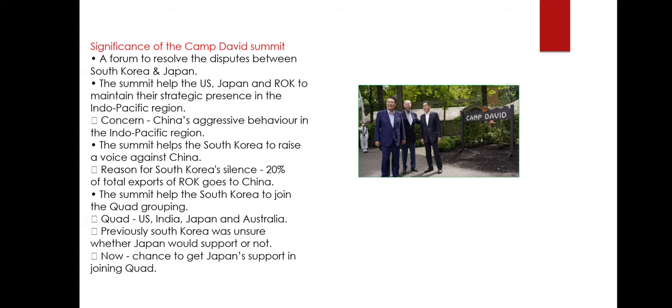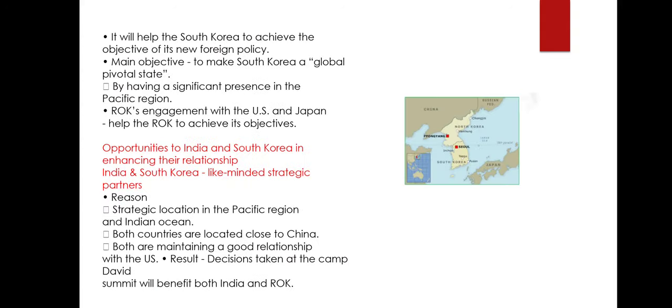Fourth, the summit may help South Korea join the Quad grouping, which consists of the U.S., India, Japan, and Australia. South Korea was unsure whether Japan would support this move given their historical disputes. But after the Camp David summit, tensions between Japan and South Korea are easing, creating a chance for South Korea to join Quad. Fifth, the summit will help South Korea achieve the objective of its new foreign policy — to become a global pivotal state and a significant player in the Pacific region.